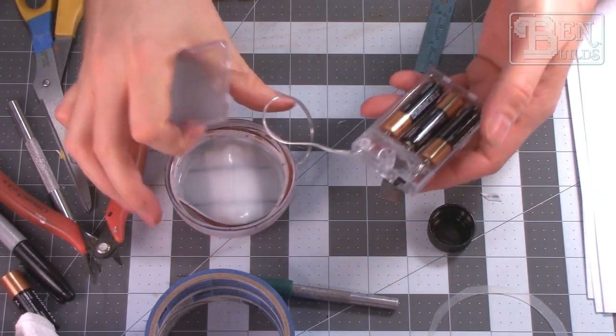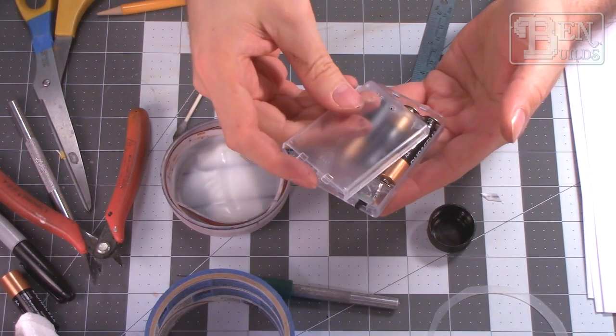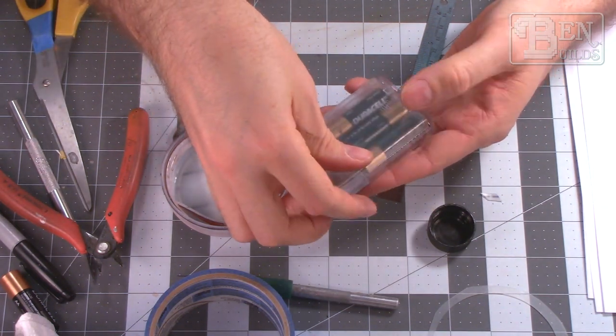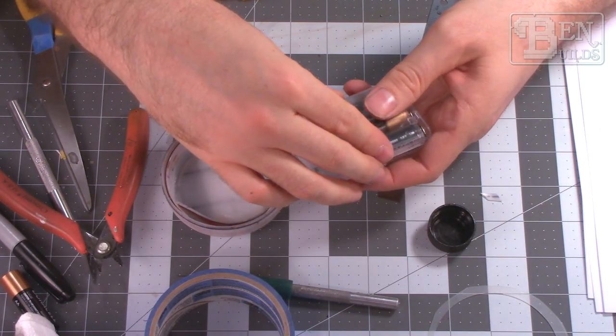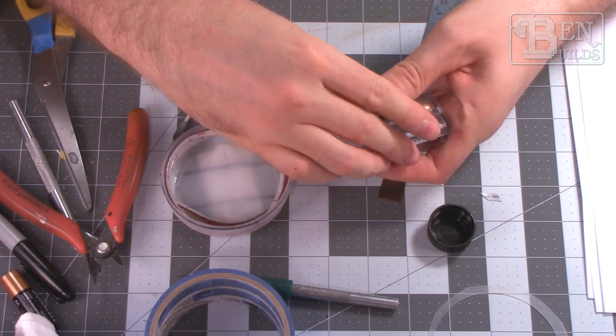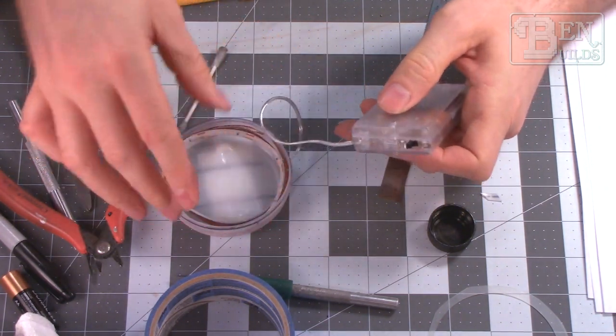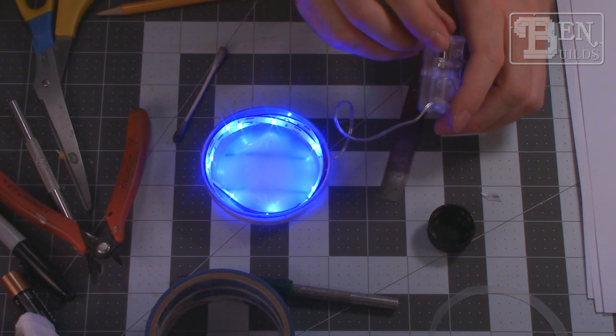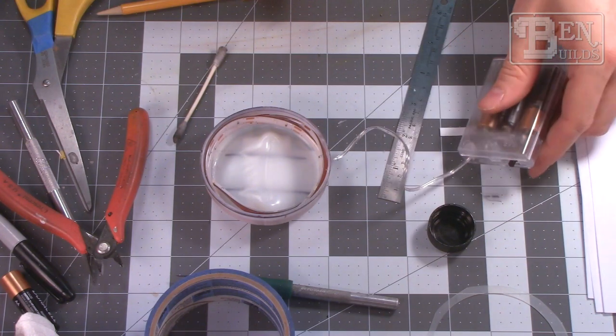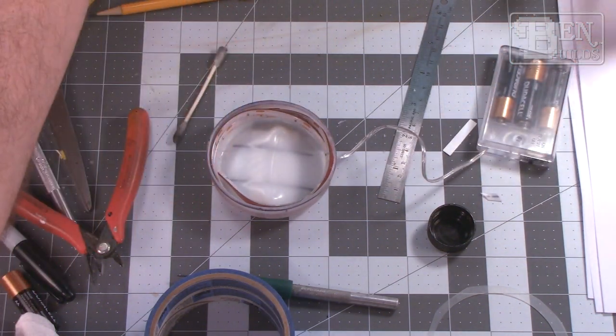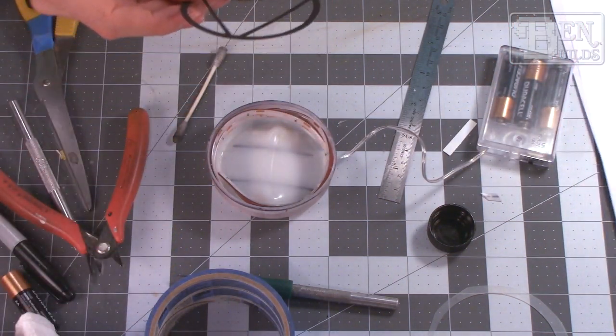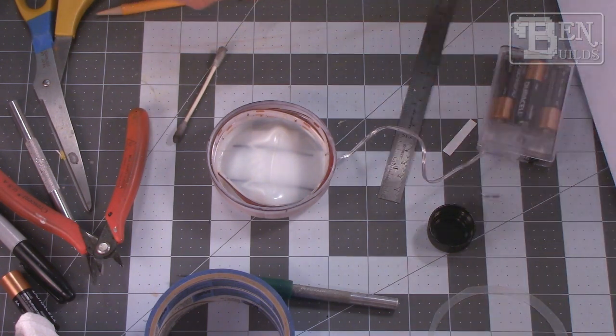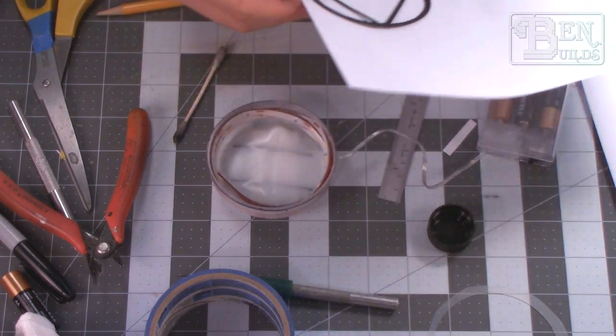All right everybody. So we took the liberty of actually stringing in the LEDs as well. Now they're not stuck down, they're just kind of placed in there to see how much I could fit in and we've got a good amount in there. I've got the batteries here in the battery pack. Let's flip her on, see what she looks like. There we go. Very nice, very blue, very bright. That's awesome.